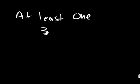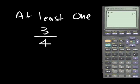And having at least one boy, there are three possible outcomes out of the four outcomes. The probability is 0.75.